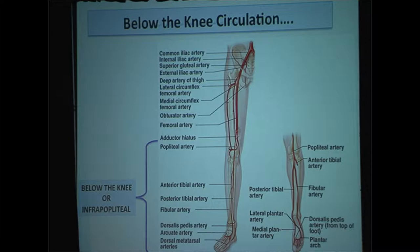So here are my disclosures. When we talk about the below-the-knee circulation, we're really talking about the arterial supply that begins at the popliteal artery and extends down to the metatarsal vessels. For many interventionalists, they may treat the popliteal artery but stop there. Others may treat the primary tibial vessels. But what I want to emphasize is that we have to be willing to treat the foot — we have to understand the foot circulation and the physiology in the foot. So that'll be an emphasis point of this talk.